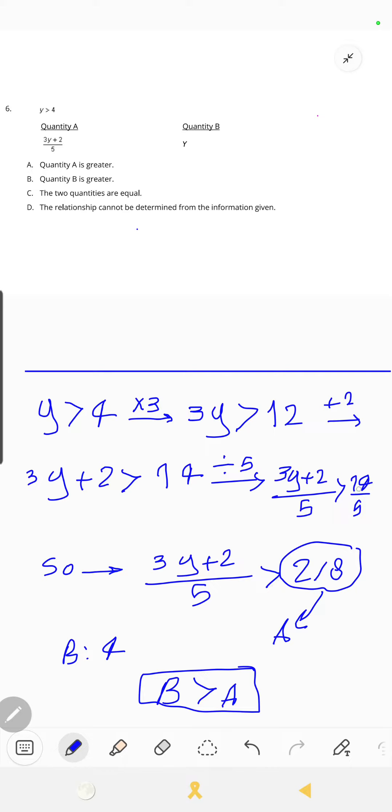(3y+2)/5 > 14/5, so (3y+2)/5 > 2.8. So 2.8 is A and B is 4, and we can say B is greater than A. But in GRE test, time is very important and we should solve this problem in the easiest way.